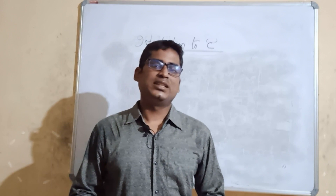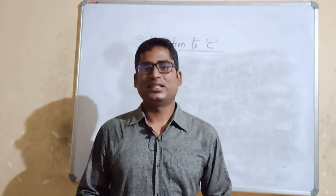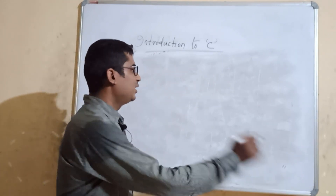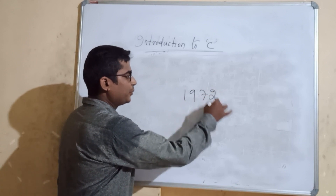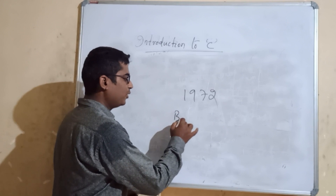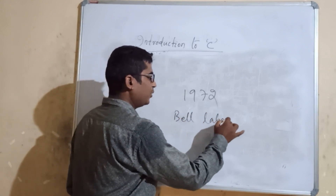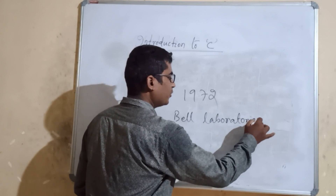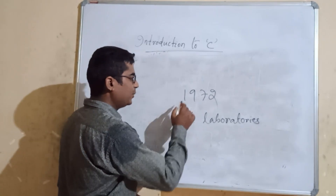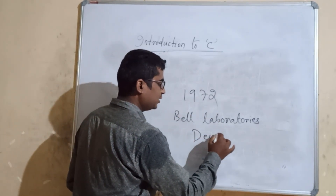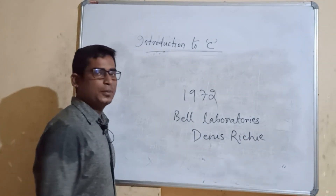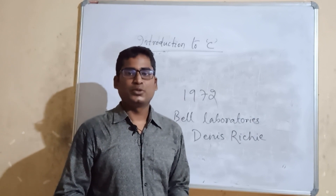The inventor of C is Dennis Ritchie. Dennis Ritchie is known as the father of C programming language. C was developed in 1972. Dennis Ritchie was an American scientist who worked at Bell Laboratories.